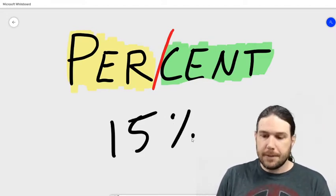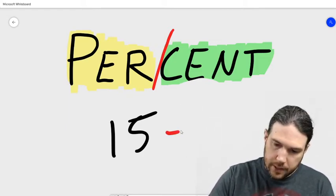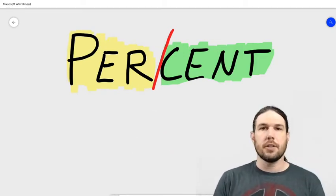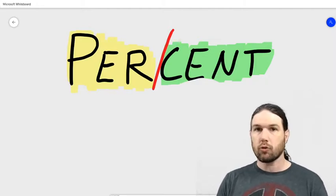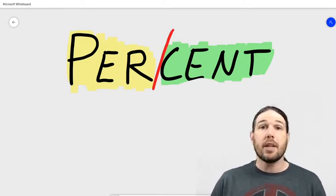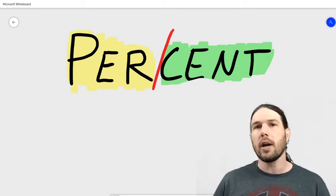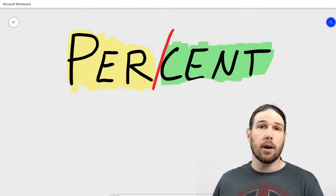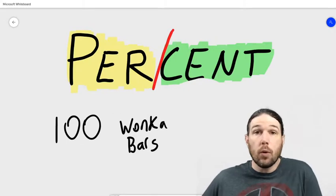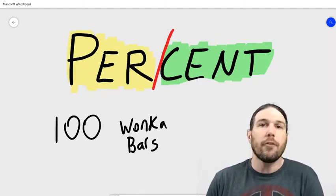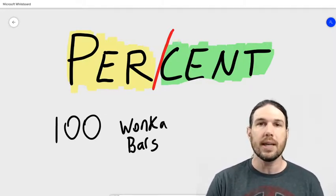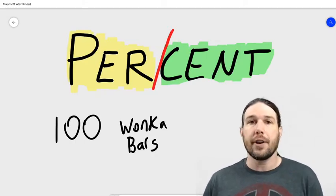So when you see the word percent, all it means is divided by a hundred. When I say fifteen percent, what that really means is fifteen divided by one hundred, and you can use a calculator to get that if you need a decimal. Where Mr. Turkentine went wrong was saying 'a thousand Wonka bars' — if he had said one hundred Wonka bars, he would have been correct. If I ate five Wonka bars and there were only a hundred in the world, I would have eaten five out of one hundred — five percent.